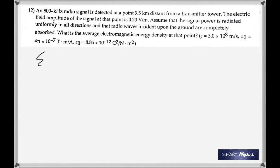Now the speed of electromagnetic waves is given, mu naught, which is permeability, and epsilon naught, permittivity. Both are given.